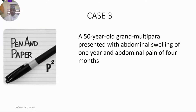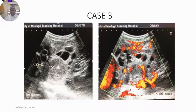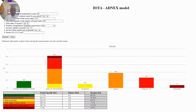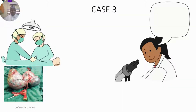Case 3 was a 50-year-old grand multipara who presented with abdominal swelling of 1 year and abdominal pain of 4 months duration. The ultrasound scan showed a typical Swiss cheese appearance. When we applied the ADNEX model, the highest relative risk was for stage 1 malignant lesion, which matched the clinical examination findings. She had surgery and histopathology confirmed it was an adult granulosa cell tumor.